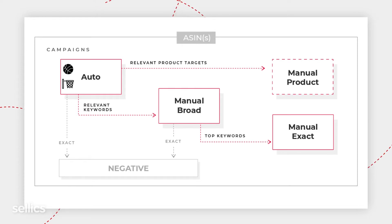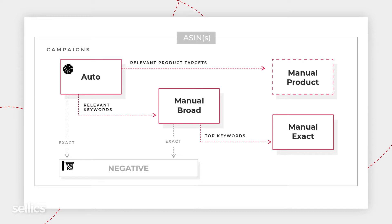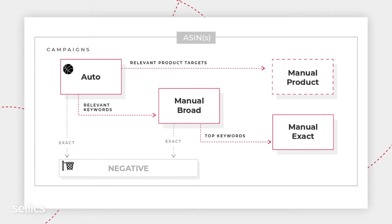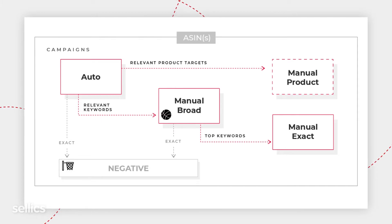Selix will recognize this and realize that Basketball Net is creating ad waste, so Basketball Net is going to be moved to negative so that you don't waste your budget. In the meantime, the search term Basketball gets a few clicks and orders right away because it's very relevant to the product we're selling. So as soon as it does convert, Selix will promote the search term to the next step of the harvesting process: the Manual Broad campaign.